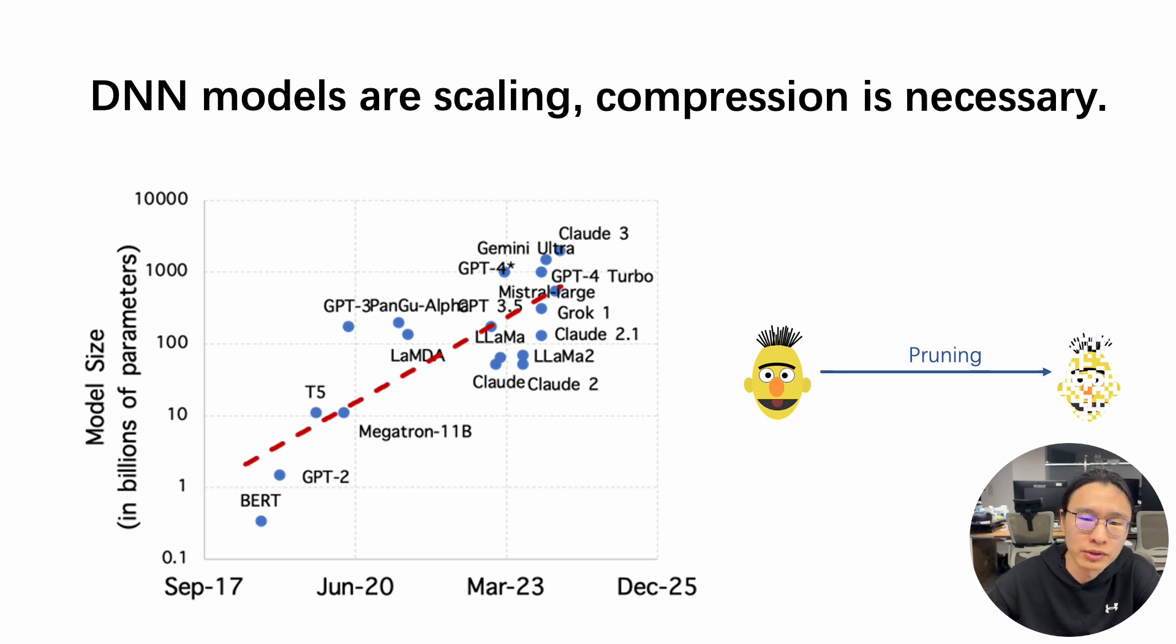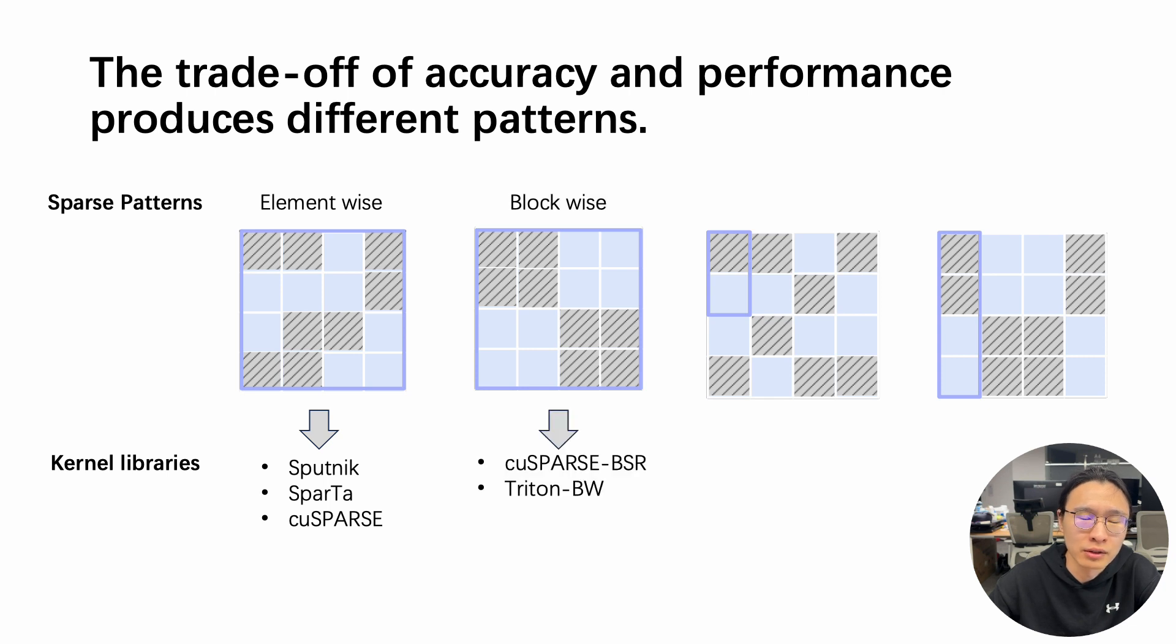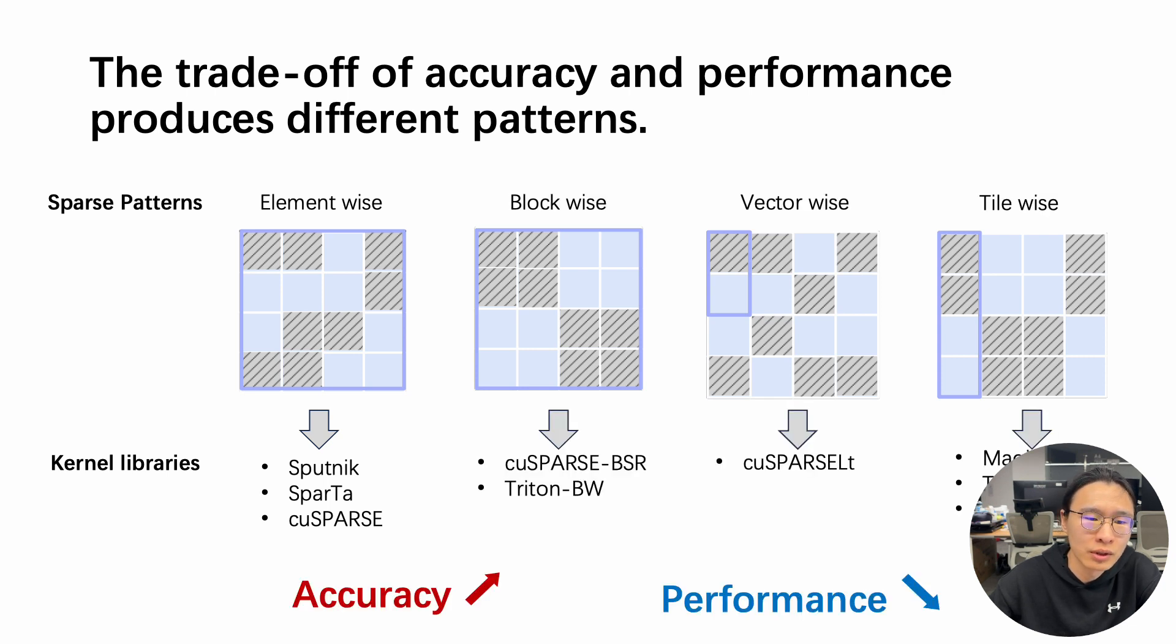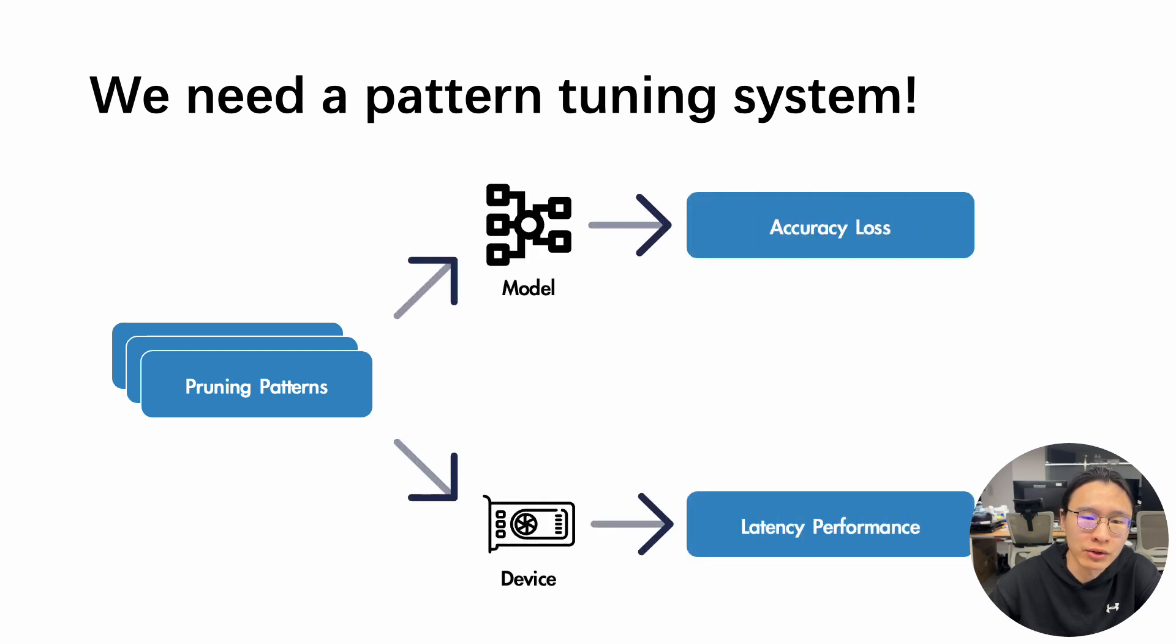And in this work, we focus on model pruning. The key feature of model pruning is the sparse patterns used. There are many sparse patterns studied in previous works focusing on different trade-offs of accuracy and performance. So we need a pattern tuning system to evaluate the actual accuracy loss on a model and the latency performance on a particular device.